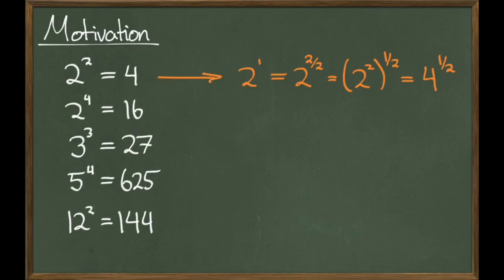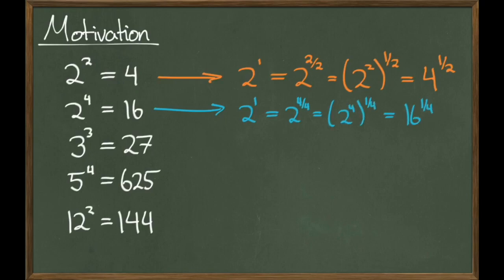So 4 to the 1-half power turns out to equal 2. In this example I was considering 2 to the 2-halves power. Let's see what happens when I consider 2 to the 4-fourths power. Since 4 over 4 is still equal to 1, it's basically the same step I took before, just slightly different. Proceeding in the same kind of way, I can rewrite this as 2 to the 4th raised to the 1-fourth power, and we know that 2 to the 4th is equal to 16. Therefore I get that 2 is equal to 16 to the 1-fourths power.